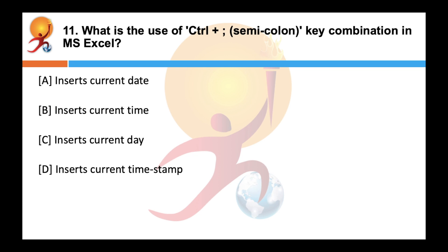What is the use of CTRL plus semicolon key combination in MS Excel? Correct answer is A. When this combination is pressed, that is CTRL plus semicolon, the current date gets inserted automatically inside the cell.